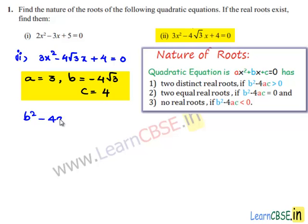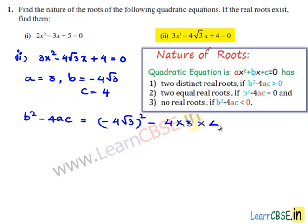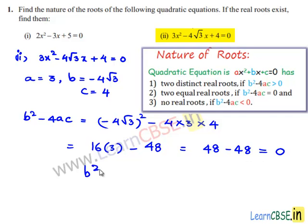The discriminant b² minus 4ac is equal to (minus 4√3)² minus 4 multiplied by 3 multiplied by 4. This gives 16 times 3 minus 48, which is 48 minus 48, equal to 0. Since the discriminant is equal to 0, the given equation has two equal real roots.